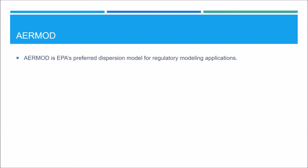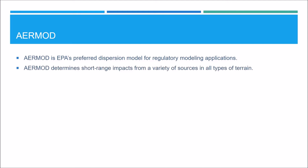AirMod is EPA's preferred dispersion model for regulatory modeling applications. AirMod determines short range impacts for a variety of sources in all types of terrain. The input file structure is similar to the structure of the AirMap input file, and for our example run, the AirMod input file is grouped into five pathways. The control pathway is where you specify the overall job control options.